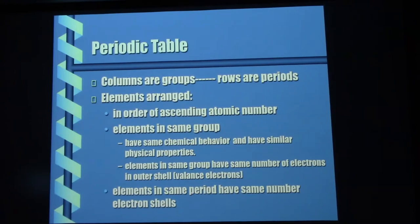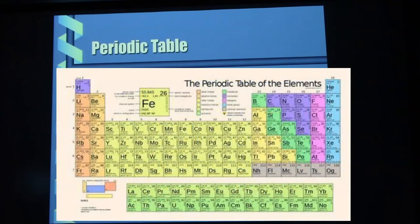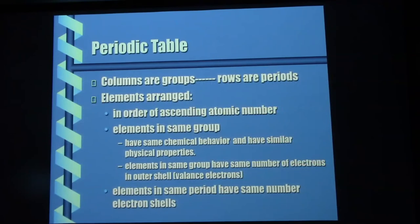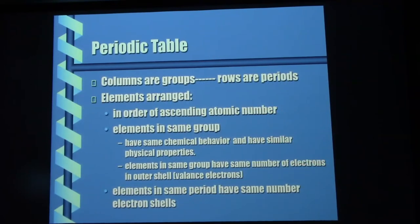Now, the periodic table of the elements — I've got one back here. The columns are referred to as groups. You've got the noble gases in a group, the halogens in another group. These things are also arranged in rows — periods. And you'll notice the rows have some characteristics in common too. They're arranged in order of ascending atomic numbers, starting at the top with hydrogen, which has an atomic number of one. Helium has two protons — atomic number two. Lithium is three, beryllium is four, et cetera.